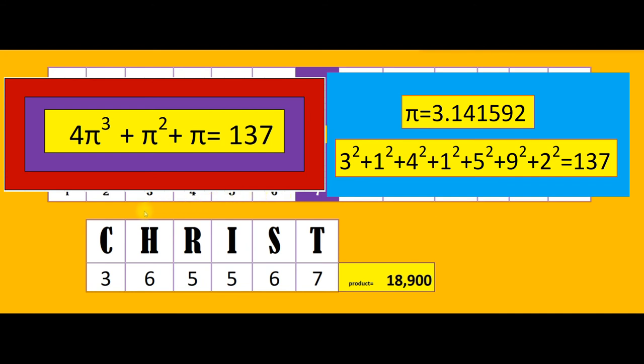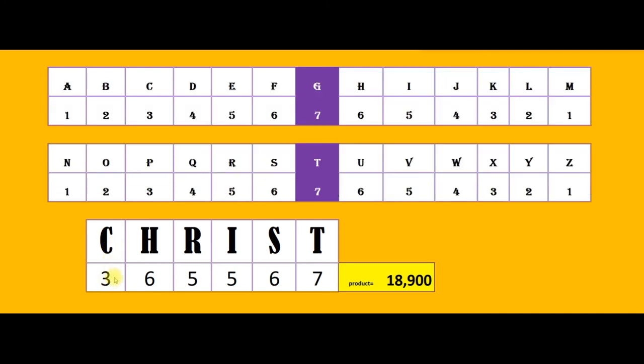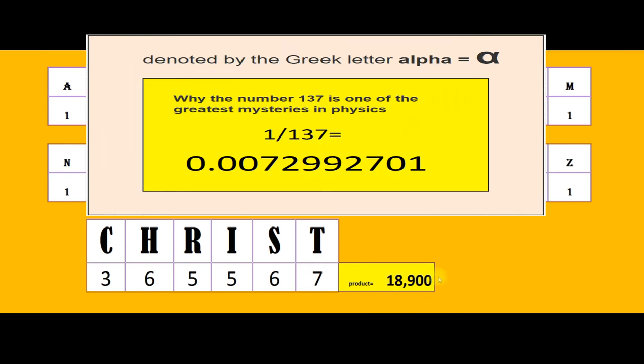Christ, meaning the anointed one. Each letter, alphanumeric value, multiplied together, has a product letter value of 18,900.